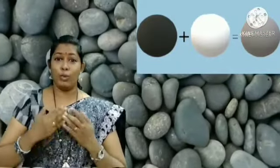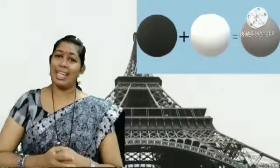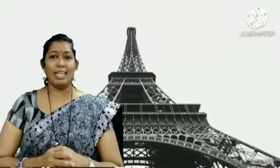Grey colour is the combination of black and white. We will get grey colour when you mix black and white. We will get grey colour. Now let's see some grey colour objects. And it is a secondary colour.